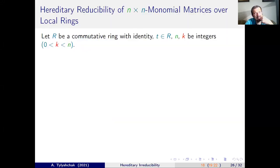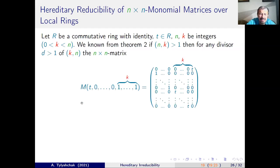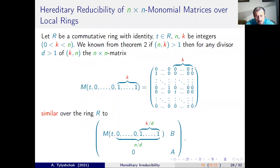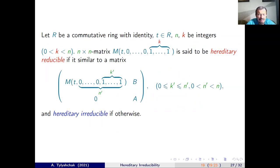Now we consider a more general case for the size of the matrix, but first assume that reducibility has a special form. We say a matrix of such form is hereditarily reducible if it is similar to a matrix of the same form in the upper-left corner of the reducible block form. We know that hereditary reducibility holds when N and K are not co-prime, but we consider this reducibility in all cases and ask: when is matrix M hereditarily reducible?